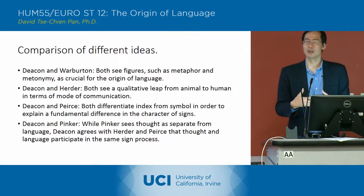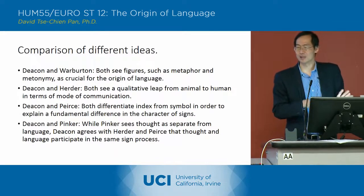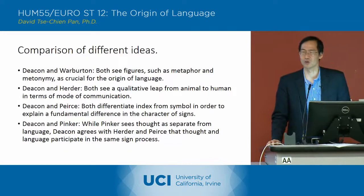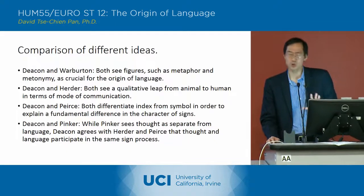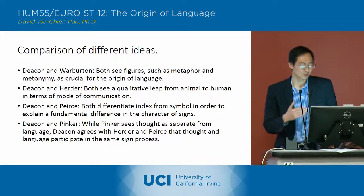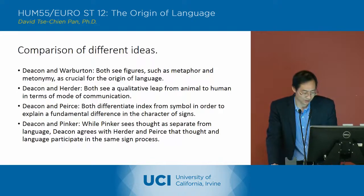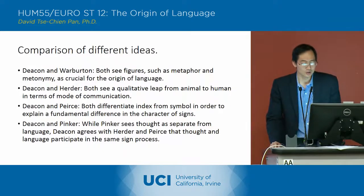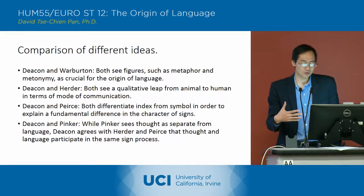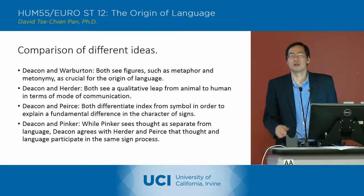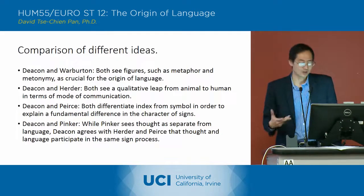This symbolic process is not only the main characteristic of human language, but it also becomes for Deacon — and for Herder — the main characteristic of human thought. Those are the ways Deacon is relating to the other thinkers we've discussed so far. I'll talk about Rousseau later when we get to his theory of the origin of language on Friday. At this point, I want to go through chapter four and think through the way in which Deacon is understanding the relationship between language and the brain.